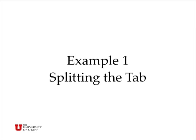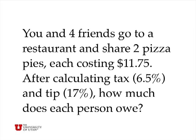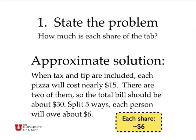So let's consider a couple of examples. The first example is a non-chemistry question, and it involves splitting the cost of a meal at a restaurant with some friends. So let's suppose that you and four friends go to a restaurant and you share two pizza pies. Each pizza pie has a listed cost on the menu of $11.75.